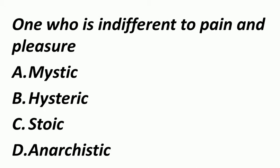One who is indifferent to pain and pleasure — ऐसा व्यक्ति जिसको दुख और खुशी से कोई मतलब नहीं होता, ऐसे व्यक्ति को हम कहते हैं Stoic. Mystic means relating to mysteries. Historic मतलब a widely emotional reaction, और Anarchist एक ऐसा व्यक्ति जो भरोसा करता है absence of hierarchy.